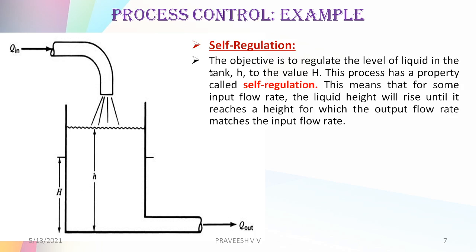This process has a property called self-regulation. The objective is to regulate the level of liquid in the tank, H, to the desired value H. Self-regulation means that for some input flow rate, the liquid height will rise until it reaches a height for which the output flow rate matches the input flow rate.